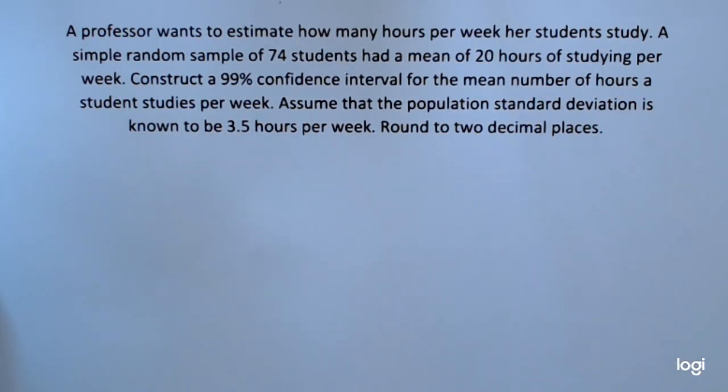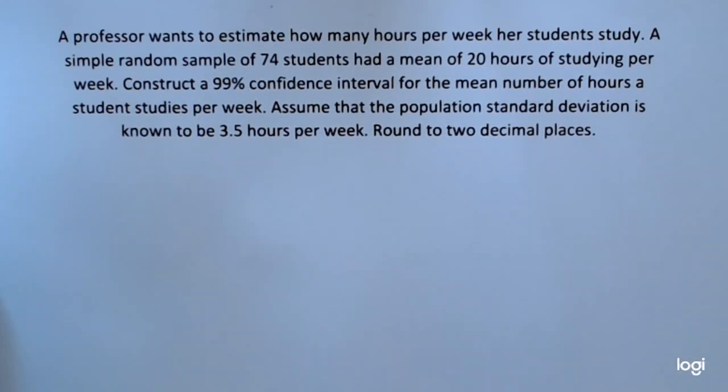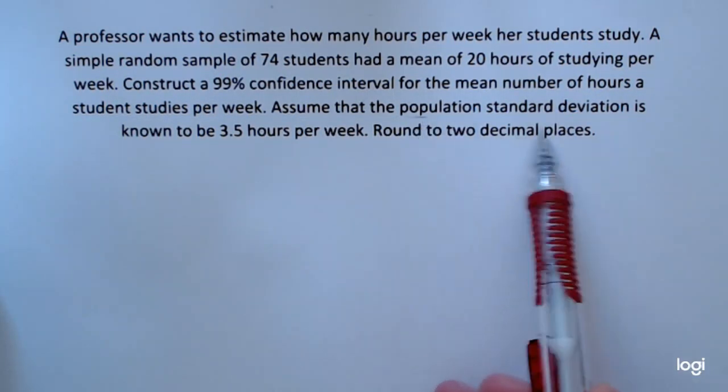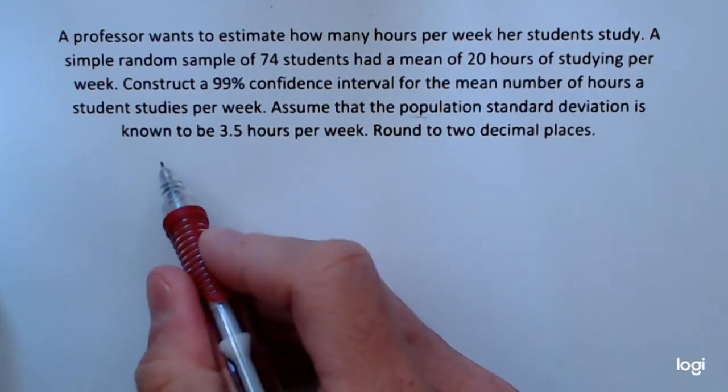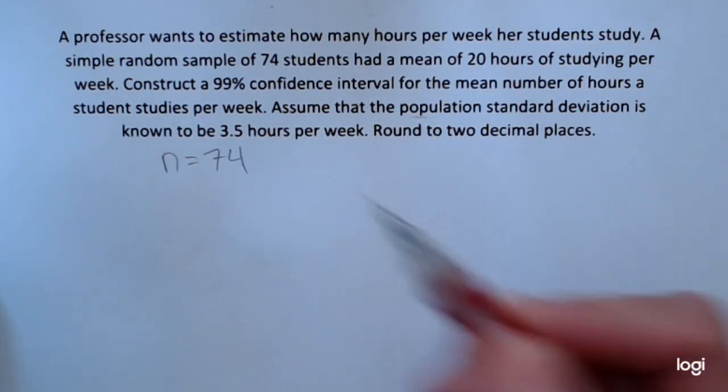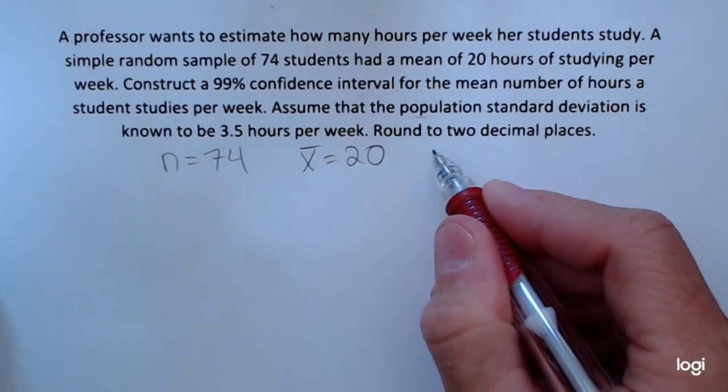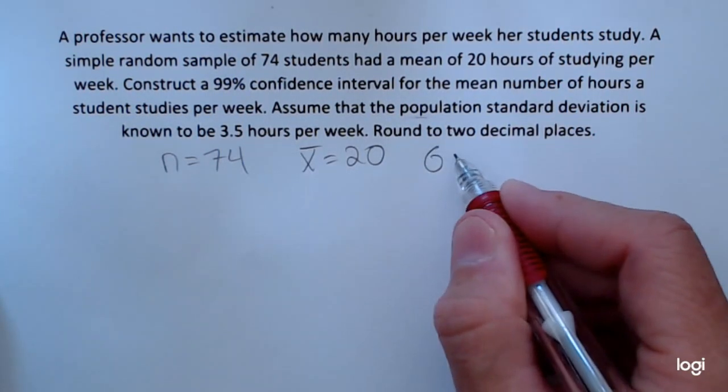So I want to construct a confidence interval for the population mean mu and I have two choices. If sigma is known, I'm going to use the z distribution. If sigma is unknown, I'm going to use the t distribution if I know that the original population is normally distributed. But in this case, I'm going to use the z distribution because we are told to assume that we know the population standard deviation. So the pieces that I need will be the sample size, 74 students, and the sample mean was 20. And again, the population standard deviation is known to be 3.5.